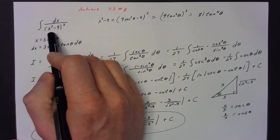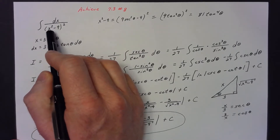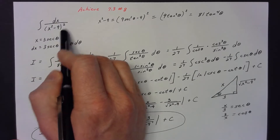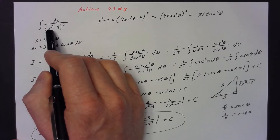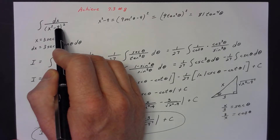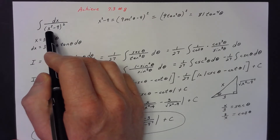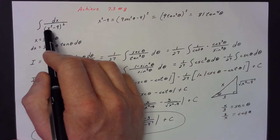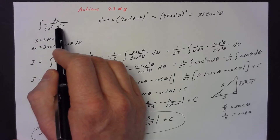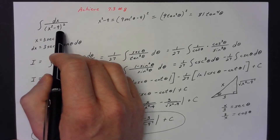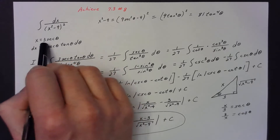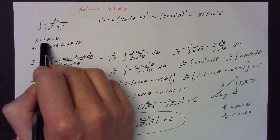You're going to have something like the integral of dx over the group (x² - 9) quantity squared. Anytime you see a variable squared minus a constant squared, you're supposed to remember that that is our secant substitution. So anytime it's x² minus a², you let x equal a secant θ. Here a is 3, so x equals 3 secant θ.